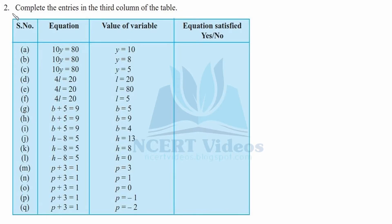Question two: complete the entries in the third column of the table — tick for yes and cross for no. The question column and variable column are given. The value of the variable is the value which satisfies the equation. For instance, if we put y equal to 10 in the first equation, because it involves multiplication, let's check whether it equals 80.